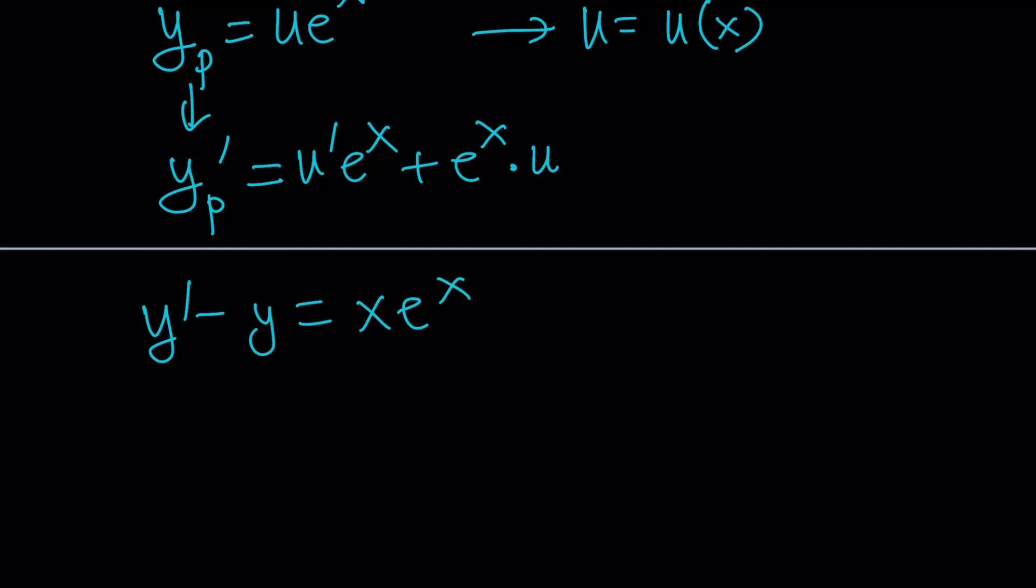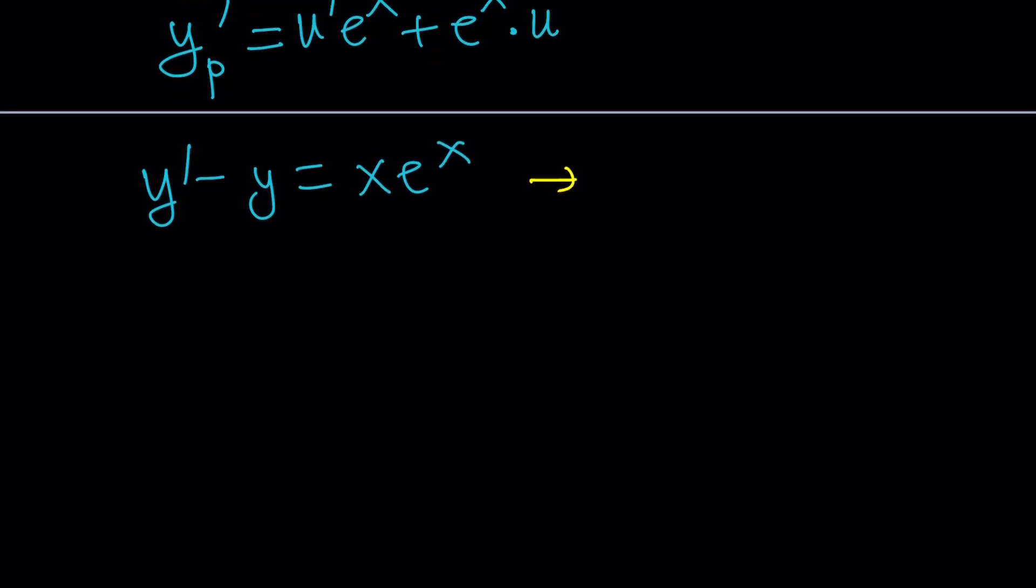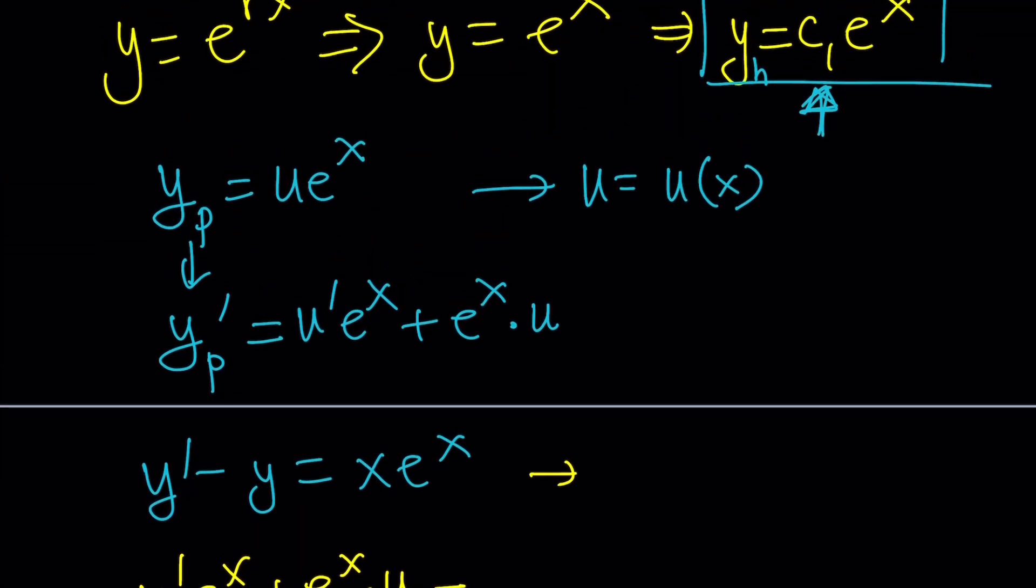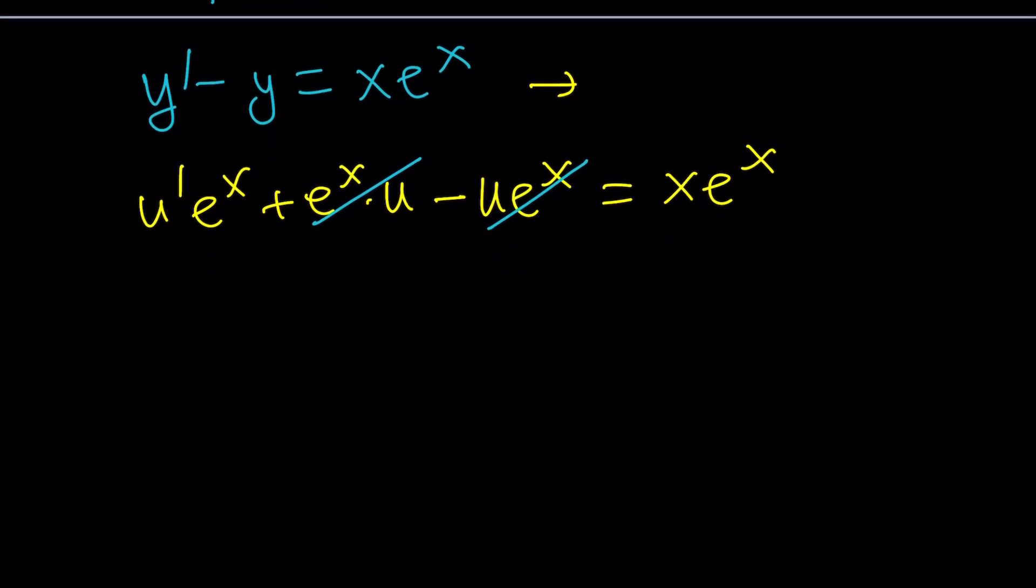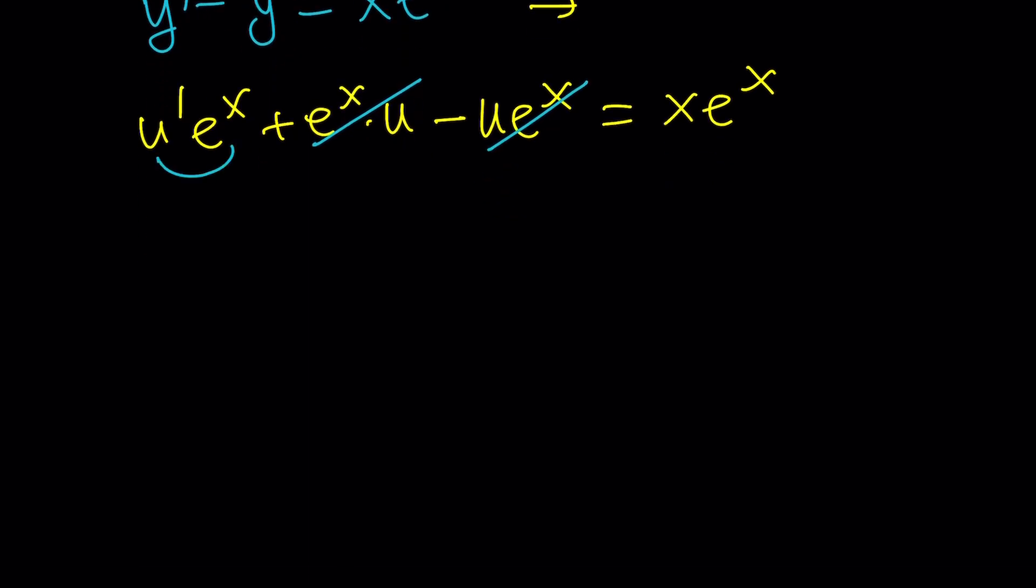In our original equation, y prime minus y is equal to x e to the x. We do need to plug it into the non-homogeneous case because our goal is to find that special u function. Let's go ahead and plug it in. y prime is u' e to the x plus e to the x u minus y, which is u e to the x. And this is supposed to equal x e to the x. Notice that u e to the x cancels out.